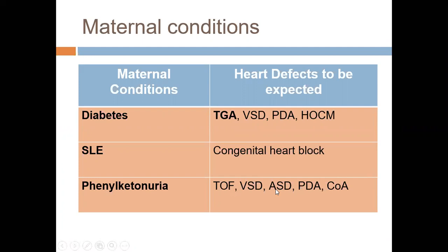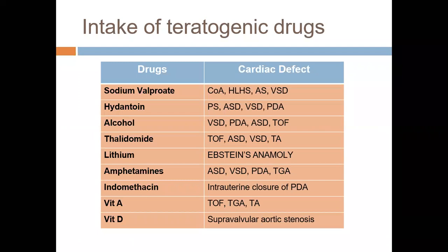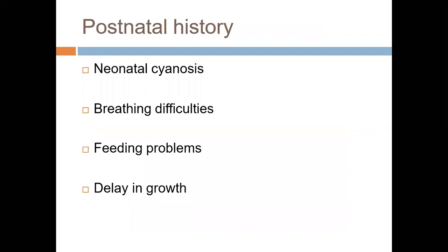Phenylketonuria in the mother is associated with congenital defects. Maternal infections such as rubella cause TOF, VSD, ASD, PDA, and coarctation. Drugs such as sodium valproate are among the long list of medications causing congenital defects, and you should identify the causative ones.